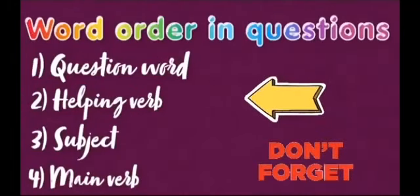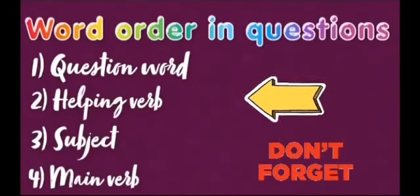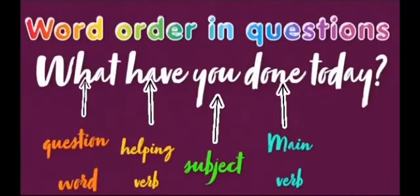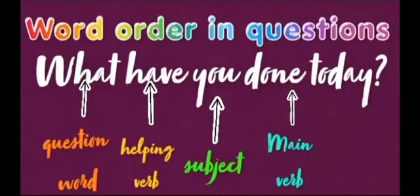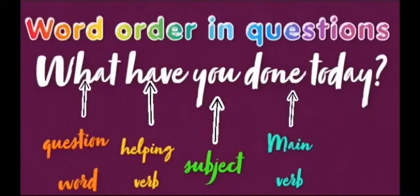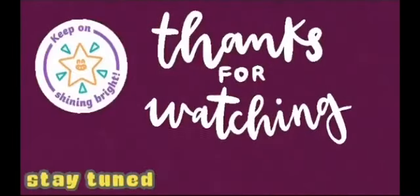If you remember this order, you are never going to go wrong with your question. So it should be: what have you done today? It's a question beginning with a question word, followed by the helping verb 'have', then comes the subject 'you', and then we have 'done' which is the main verb. What have you done today?